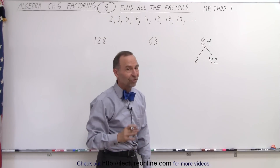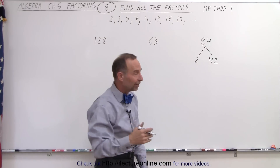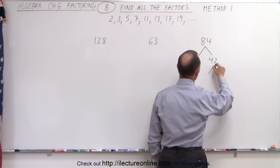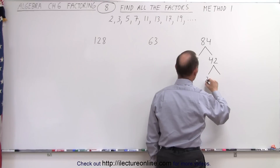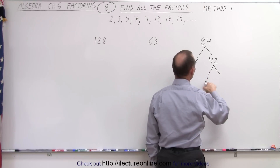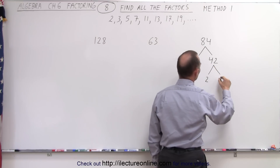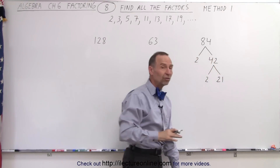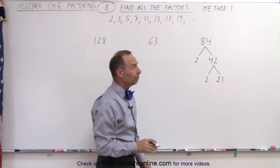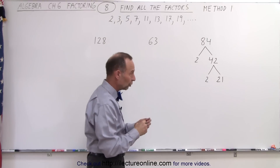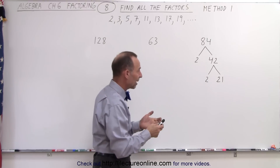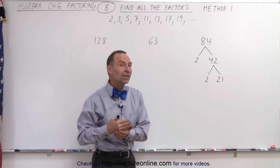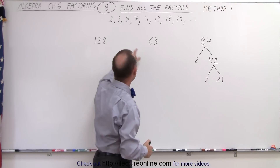Notice it's still an even number, which means it can still be divided by 2. So here we write the number 2, and 2 goes into 42 twenty-one times. Now 21 is no longer even, which means we can no longer divide it by 2.